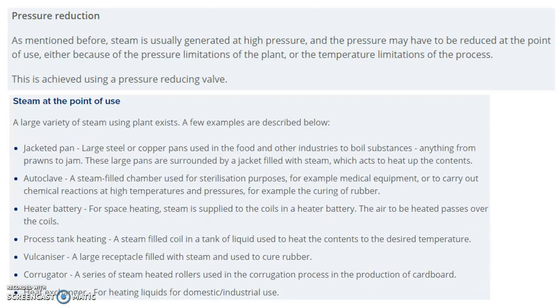Next is steam at the point of use. A large variety of steam-using plant exists. A few examples in process industries are jacketed pan, autoclave, heater battery, process tank heating, vulcanizer, corrugator, and heat exchangers. These are some of the applications where steam is used at particular points.